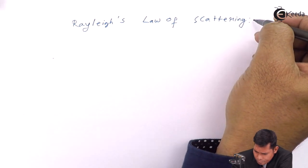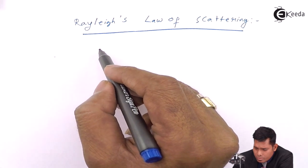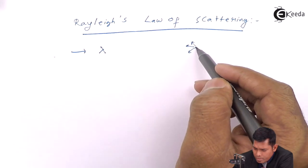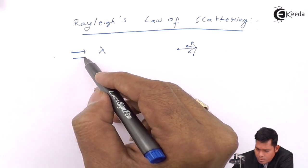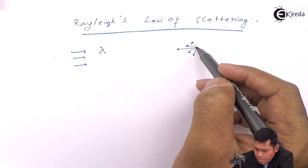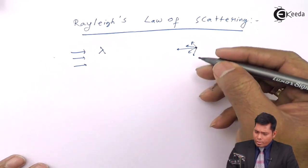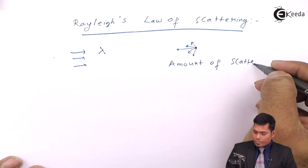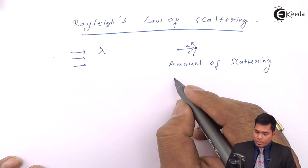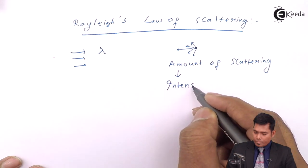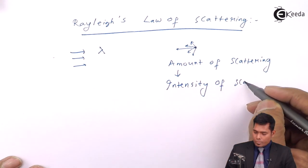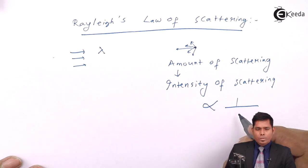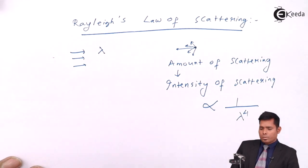It says that the wavelength of light that is used, suppose lambda, when the particle which is scattering the light in all possible directions is very small, the amount of scattering, that is measured by the intensity of scattering, is inversely proportional to the fourth power of the wavelength of light used.